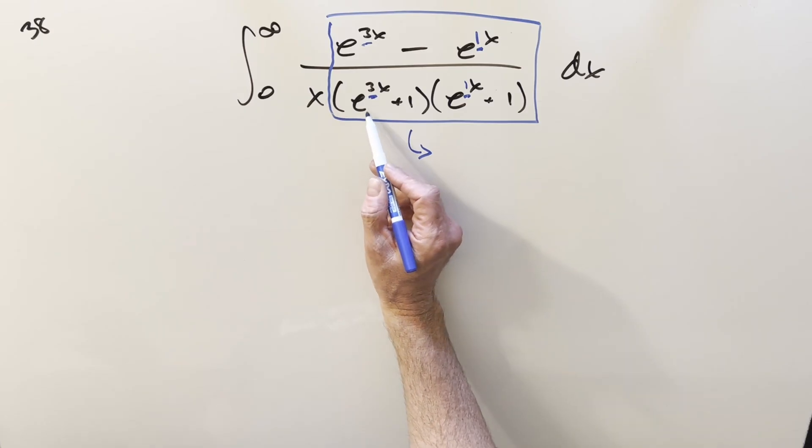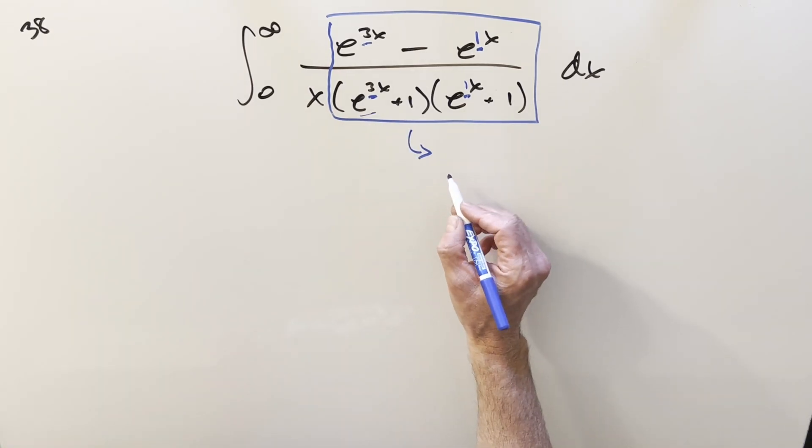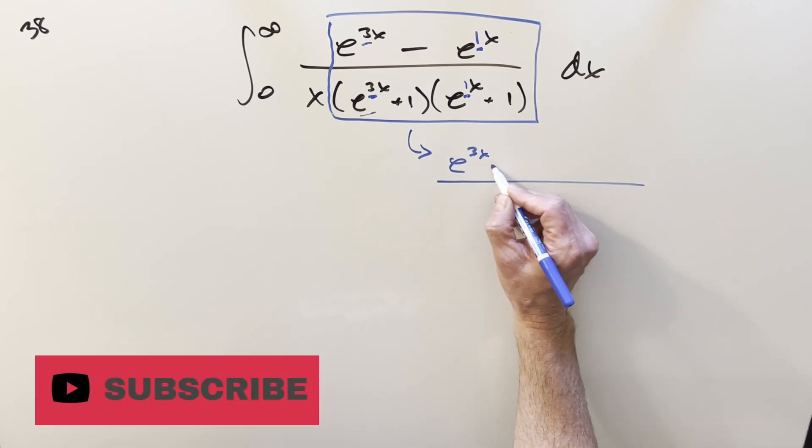You could do, if you call this thing like y cubed and this y, you could do out the partial fractions formally, but I'm just going to kind of do it on the fly and create the numerator to get cancellation.